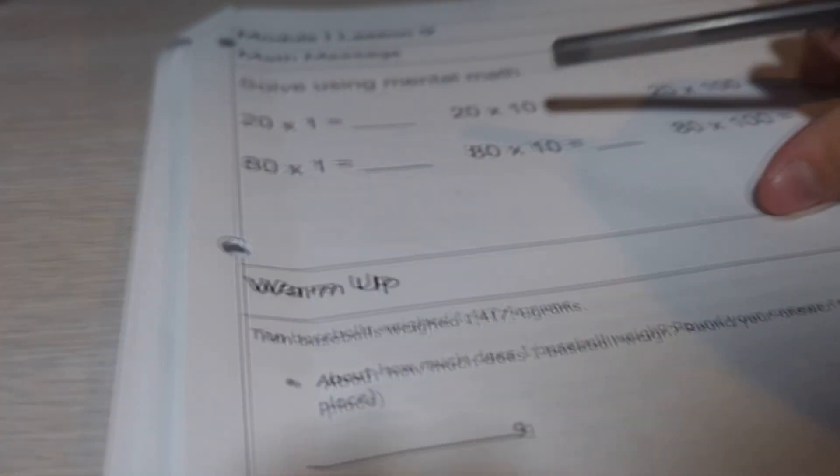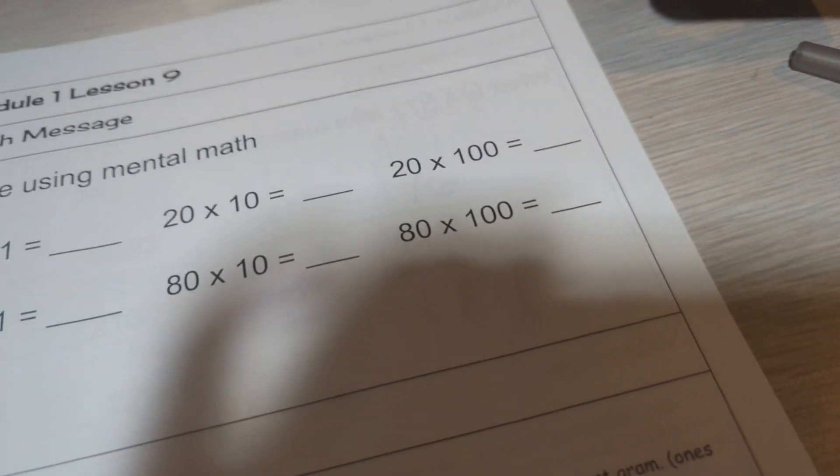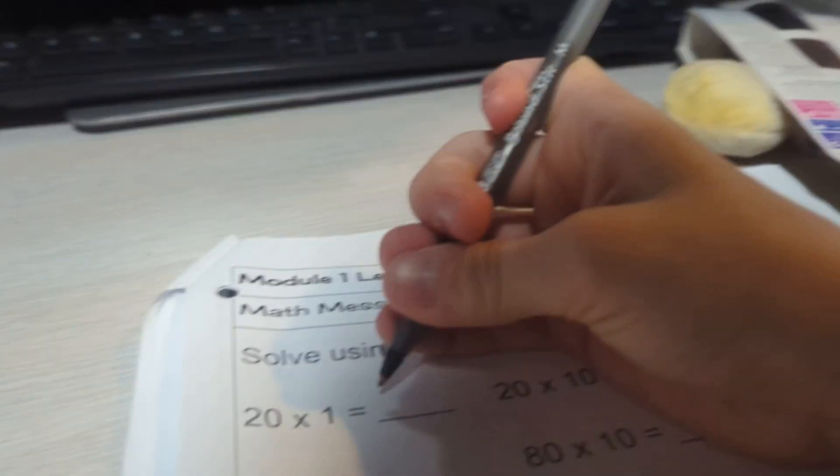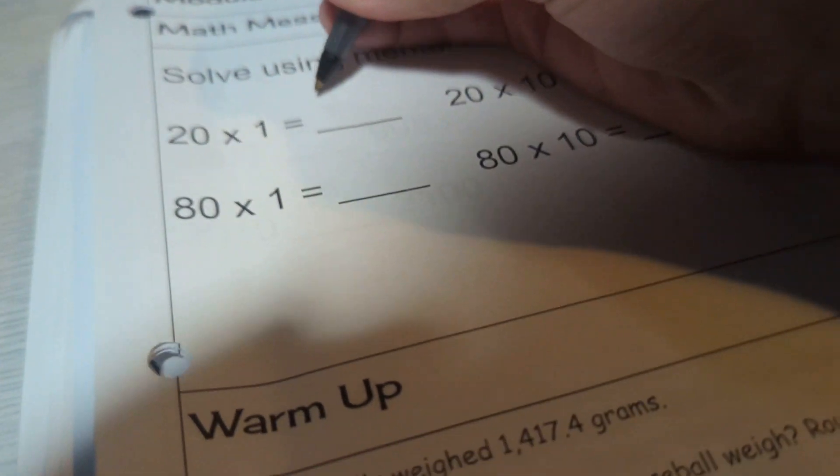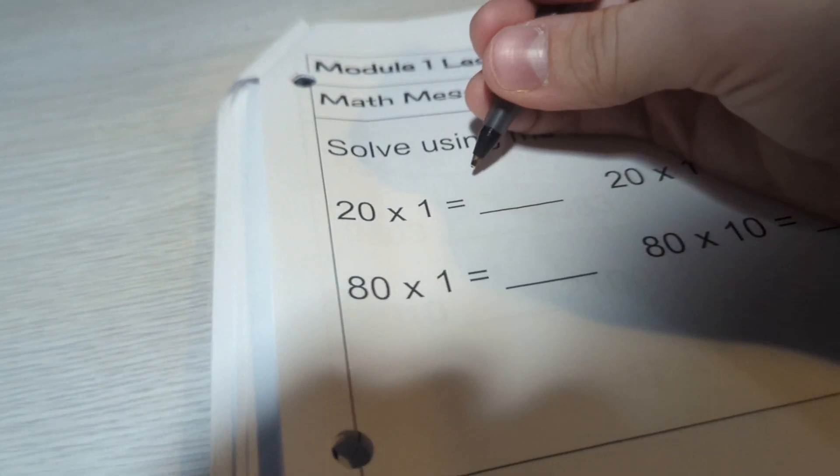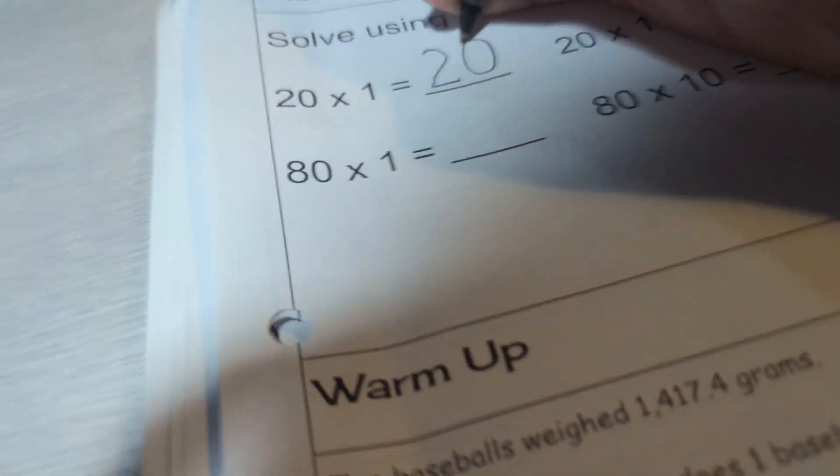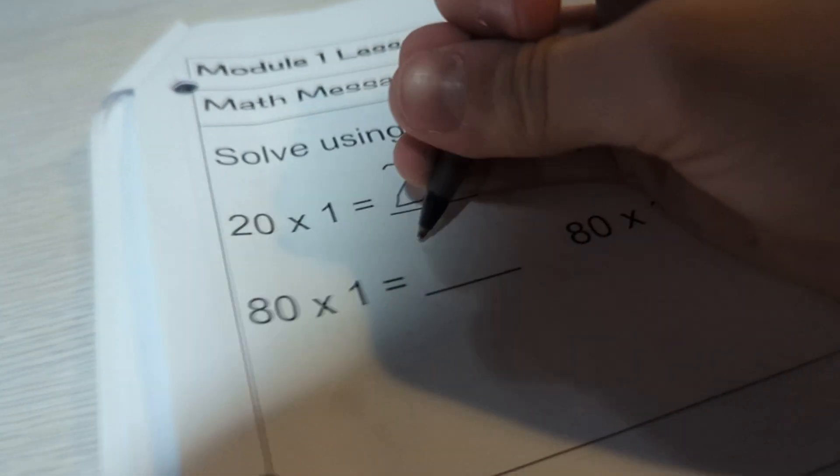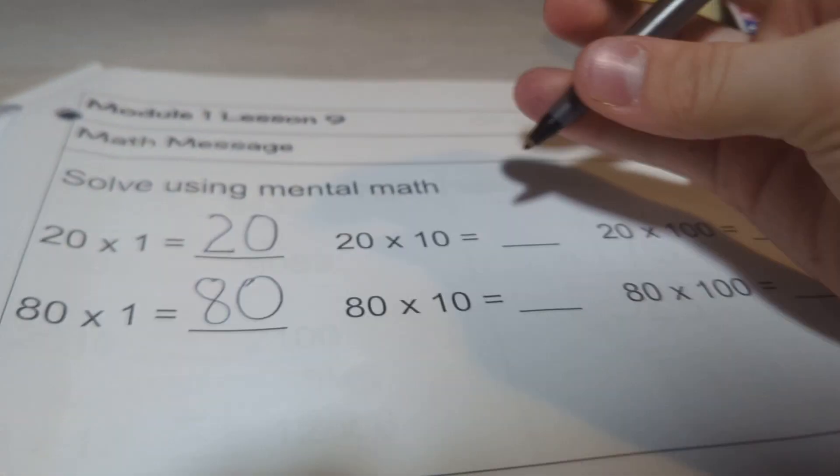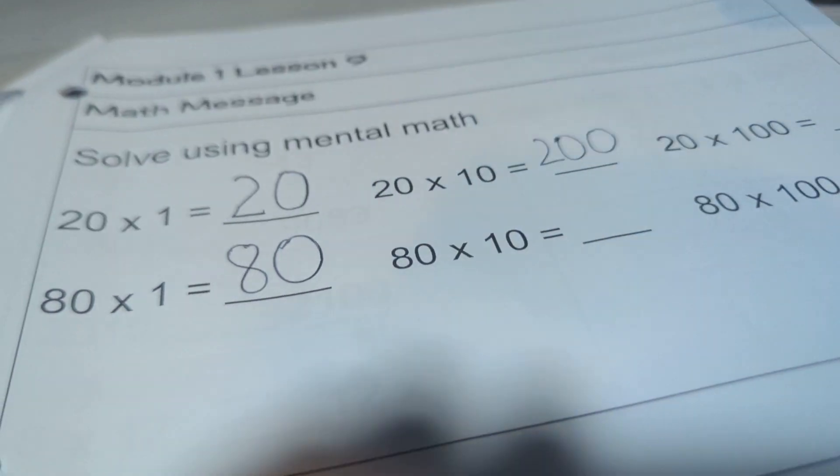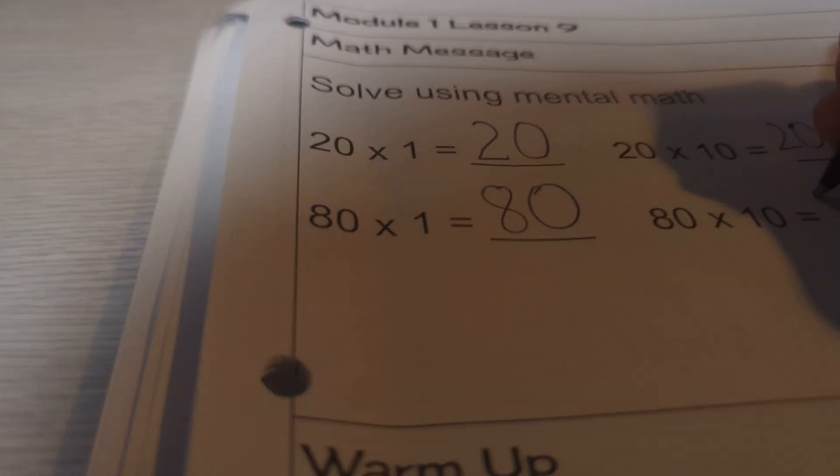Now we'll move on to lesson 9. If you multiply by 1 or 10, that's okay to you. We'll do these first ones together. 20 times 1 is 20. 80 times 1 is 80. 20 times 10 is 200. 80 times 10 is 800.